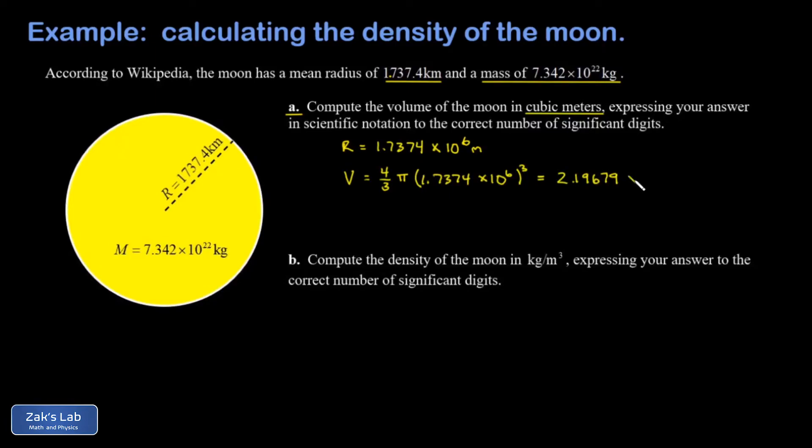Keeping plenty of extra precision for the moment, I get 2.19679 × 10¹⁹ cubic meters. Then I need to think about where this should be rounded. The input into this calculation was the radius, written to five significant digits, so I'm going to round off to five significant digits. That means I round up to an 8 in that last decimal place, getting 2.1968 × 10¹⁹ cubic meters.